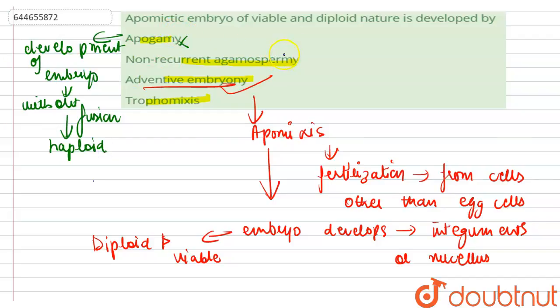Non-recurrent agamospermy is when egg cells directly develop into embryo sac without fertilization or fusion, and hence the embryo is haploid. This option is also incorrect.